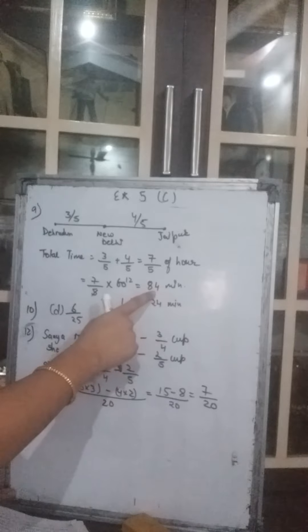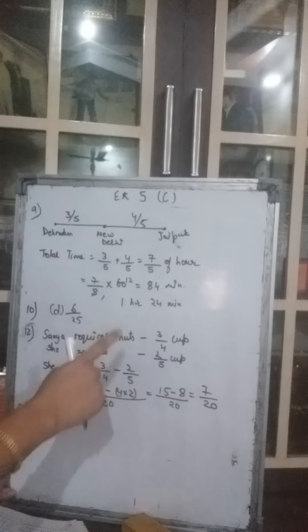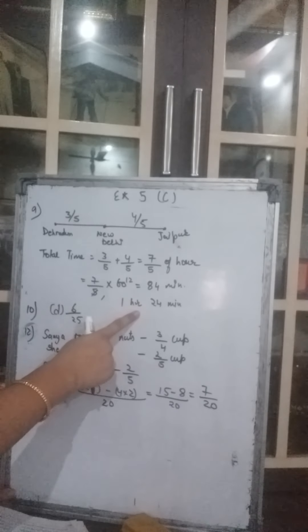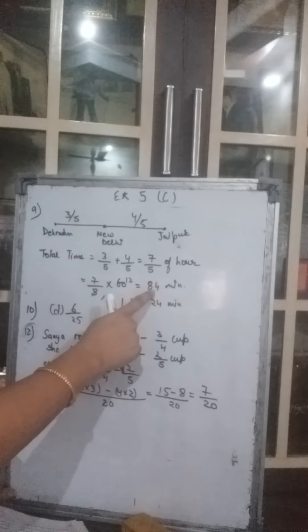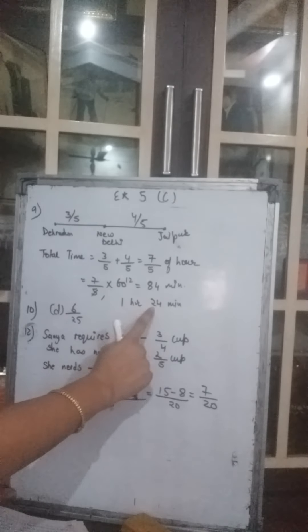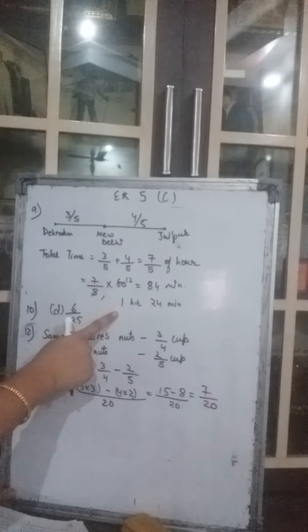84 minutes can be converted into hours. 60 minutes makes 1 hour, so subtract 60 from 84 and 24 minutes are left. So the total flight time is 1 hour 24 minutes.